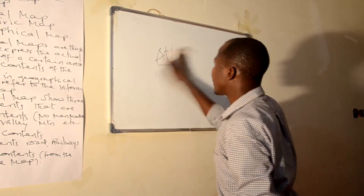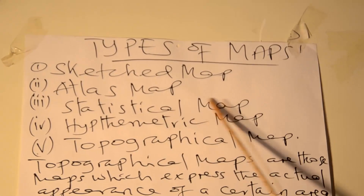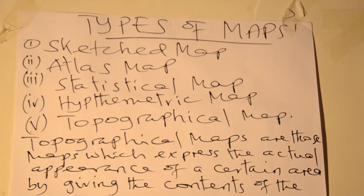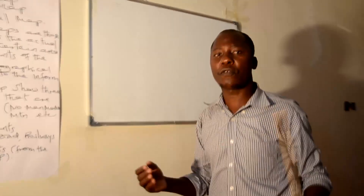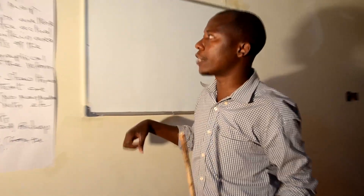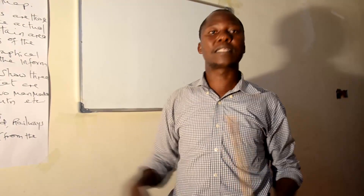The third type of map is called a statistical map. What is the meaning of a statistical map? A statistical map is the kind of map whereby there is organization or distribution of data — or population — which has been recorded from the Earth's surface onto a sheet.